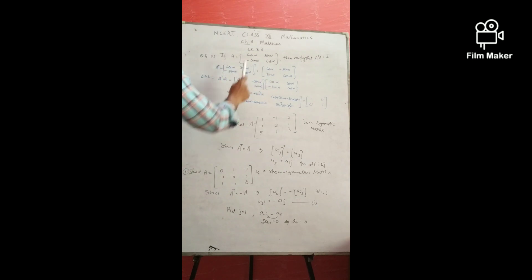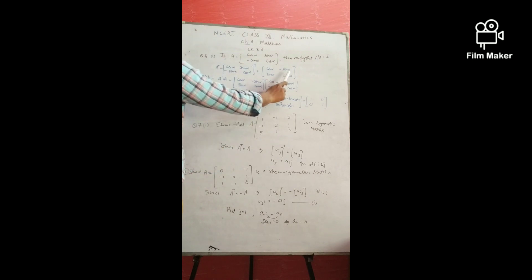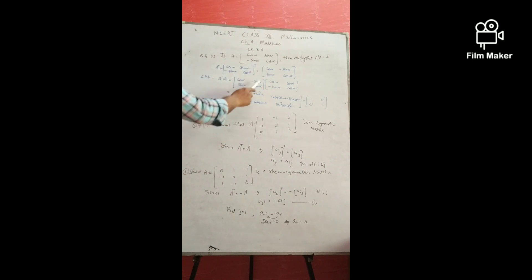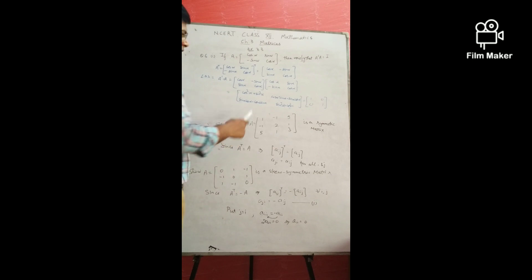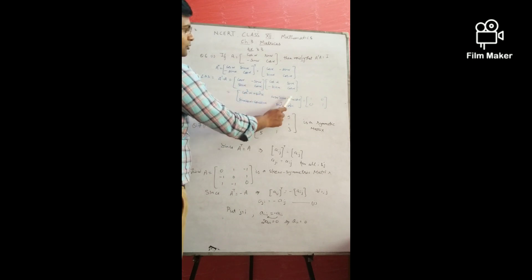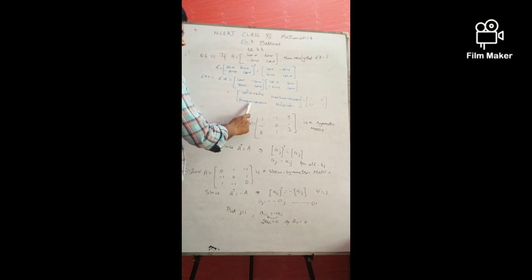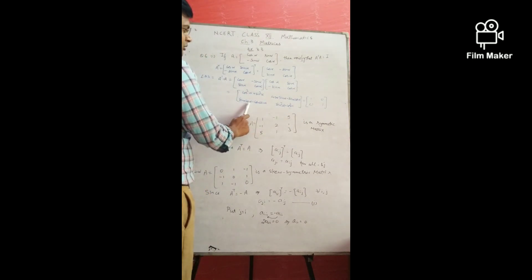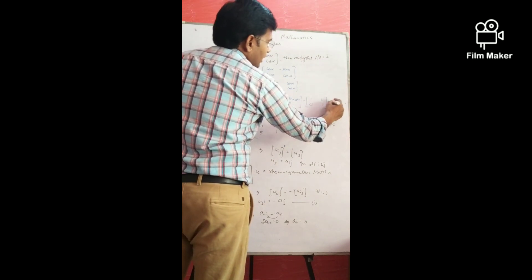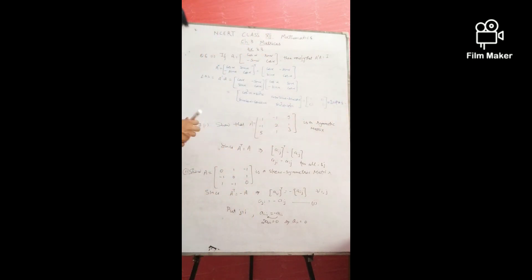A transpose: row [cos α, sin α] becomes a column, and [−sin α, cos α] becomes a column, giving A' = [cos α, −sin α; sin α, cos α]. Now computing LHS: A' × A = [cos²α + sin²α, cos α·sin α − sin α·cos α; sin α·cos α − cos α·sin α, sin²α + cos²α] = [1, 0; 0, 1] = I = RHS. Verified.